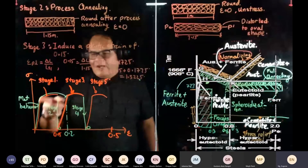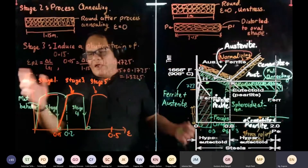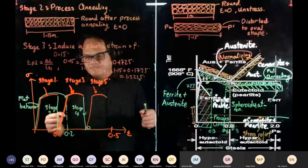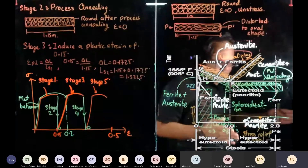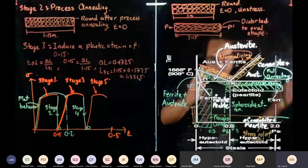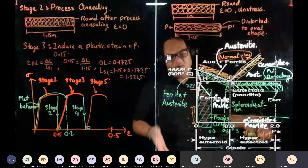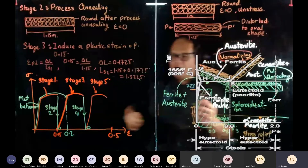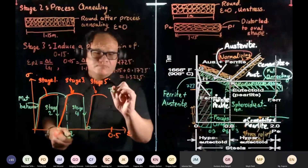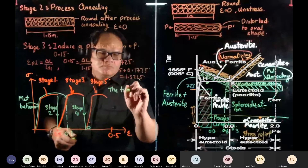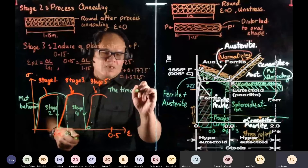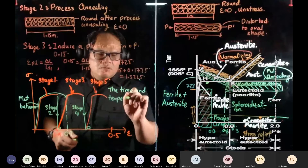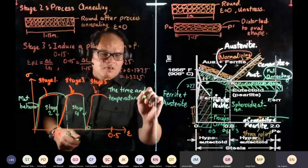Now the problem is this: you bend stage one — say you have one thousand pieces — you have to bend all one thousand pieces, then send them to the furnace to process anneal. The process anneal again is dependent on how badly the distortion occurred. The time and temperature are key factors.